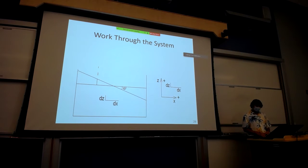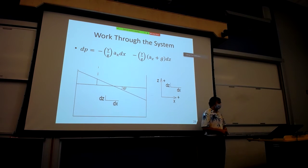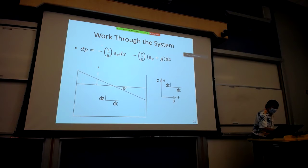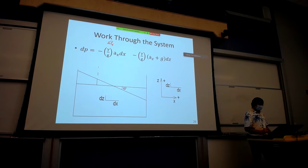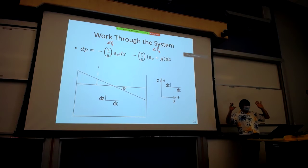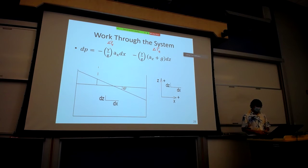If you want to know the pressures throughout the system, this is the pressure equation we developed. The change in pressure going from one point to another is affected by movement in the x direction and movement in the z direction. This equation was generated by combining the two partial derivative statements for x and z pressure changes.